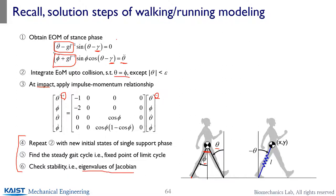Now let's see how these procedures change with the spring leg. For the spring leg, we only have a single mass. But unlike the inverted pendulum, the X and Y coordinates are not independent — even though theta is defined, L may vary. So you need X and Y as two variables to describe the position of the center of mass.